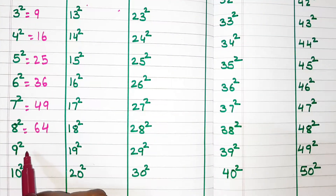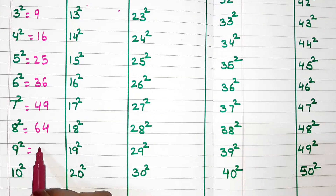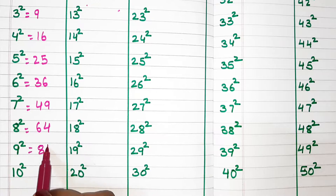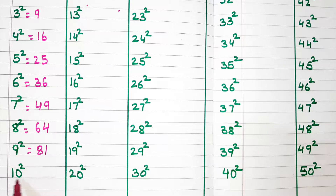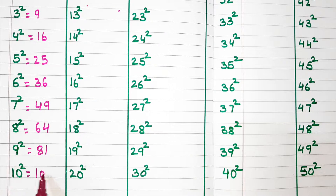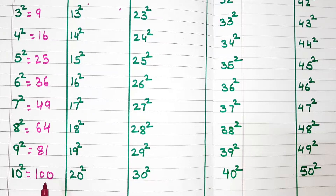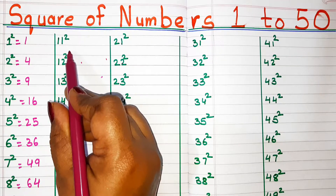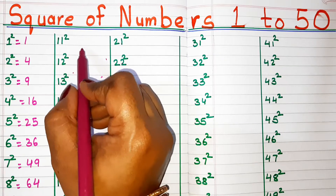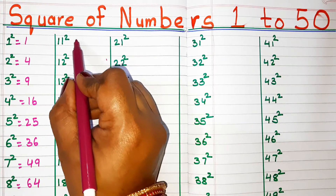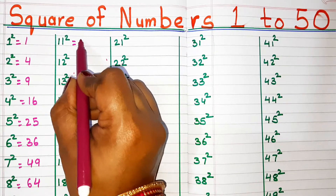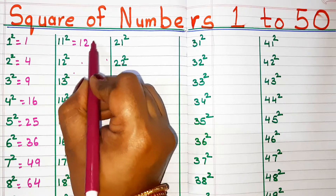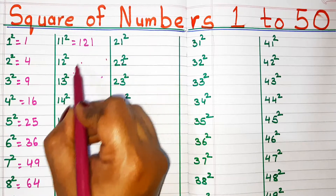Square of 9, 81. Square of 10, 100. Square of 11, 121.